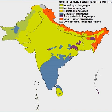As a Dravidian language, Tamil descends from Proto-Dravidian. Linguistic reconstruction suggests that Proto-Dravidian was spoken around the 3rd millennium BCE, possibly in the region around the lower Godavari river basin in peninsular India. The material evidence suggests that the speakers of Proto-Dravidian were the culture associated with the Neolithic complexes of South India. The next phase is Proto-South Dravidian, spoken around the middle of the 2nd millennium BCE, and Proto-Tamil emerged around the 3rd century BCE. The earliest epigraphic attestations of Tamil are generally taken to have been written shortly thereafter.